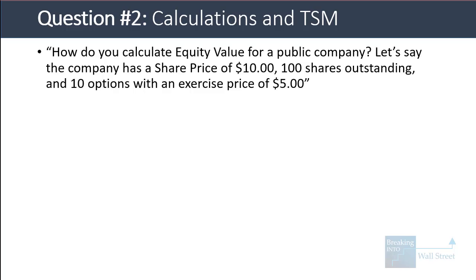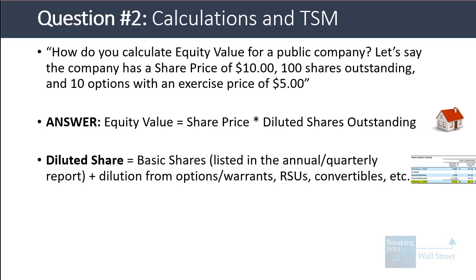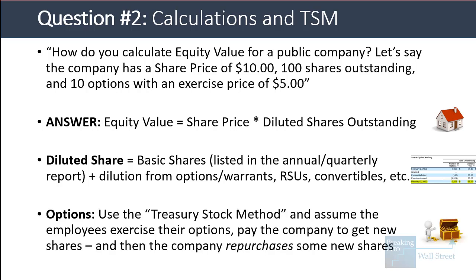If you understand those, they might ask about calculations. How do you calculate equity value for a public company with a share price of $10, 100 shares outstanding, and 10 options with an exercise price of $5? Equity value equals share price times diluted shares outstanding. Diluted shares equal basic shares plus dilution from options, warrants, restricted stock units, convertibles, and other sources. For options, you use the treasury stock method: employees exercise their options, pay the company to get new shares, and then the company repurchases some of those new shares.